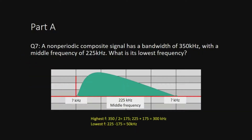Next, question number 7 asks you to find the lowest frequency. This has a relationship with question 3 — you need to know how to calculate bandwidth: bandwidth equals highest minus lowest. The question describes a non-periodic composite signal, which has multiple simple sine waves with no repeating pattern. This signal has a bandwidth of 350 kilohertz.